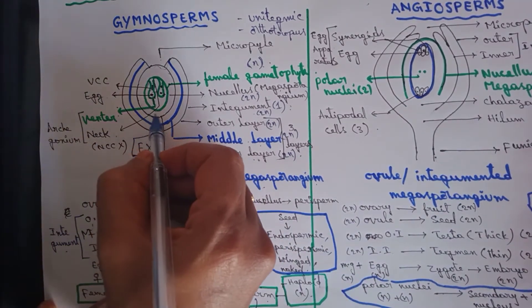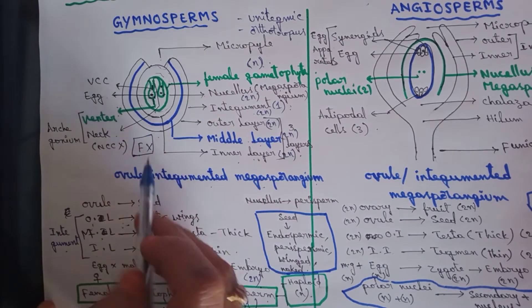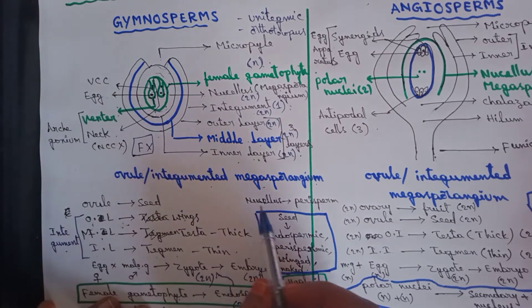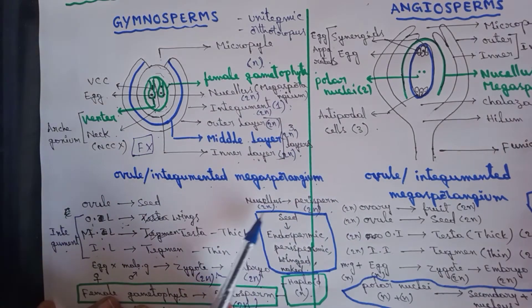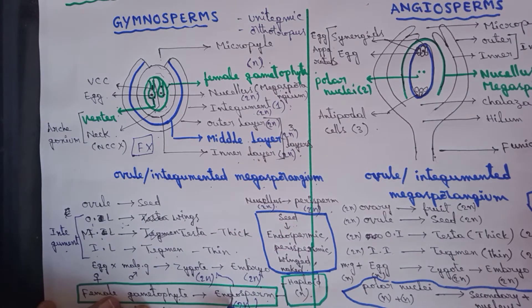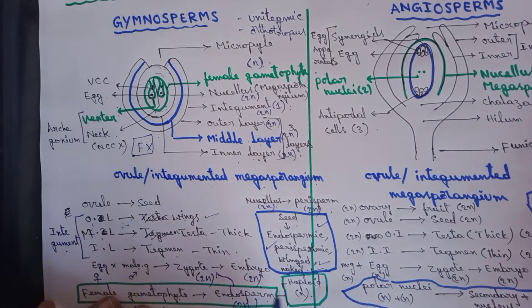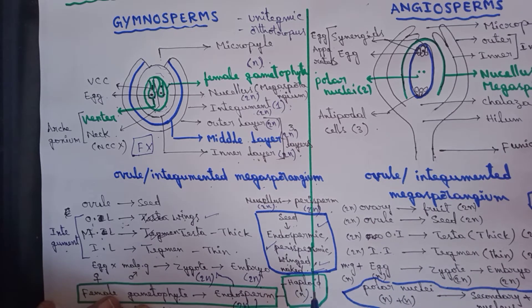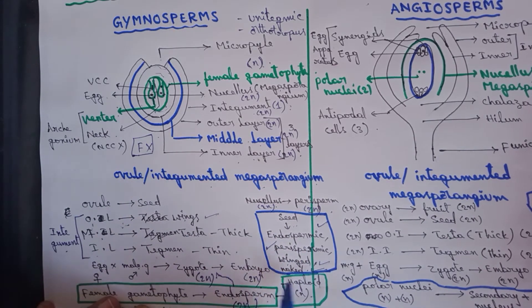The remaining part of the nucellus — present outside the female gametophyte and inside the integument — develops into perisperm, which is diploid. So the seed consists of: endosperm (haploid), perisperm (diploid), wings (diploid), and it is a naked seed because it is not covered by ovary and hence not covered by fruit wall. The seed is described as endospermic, perispermic, winged, and naked.